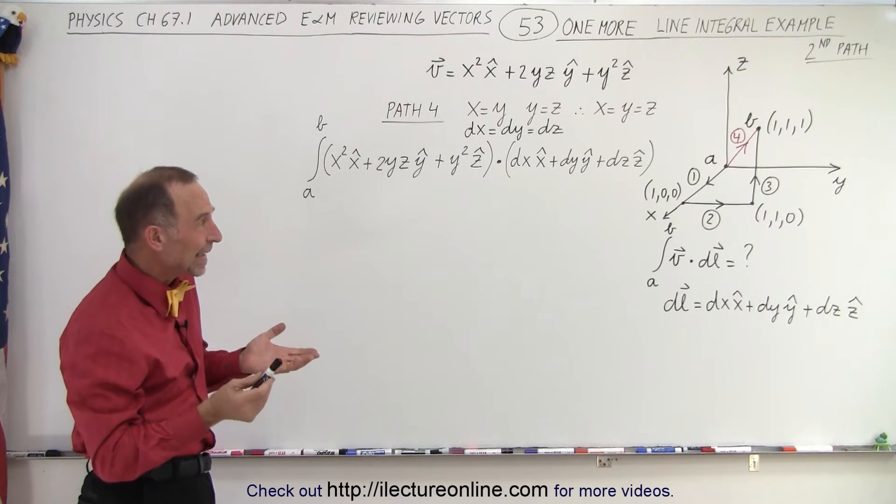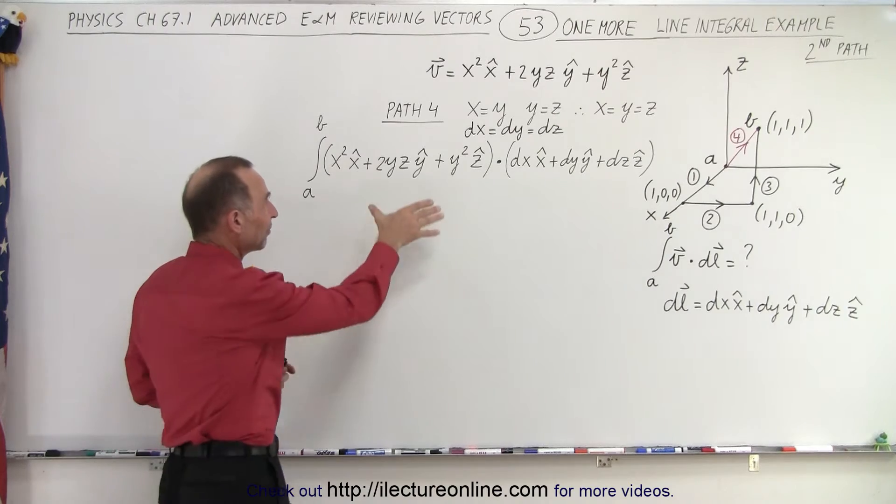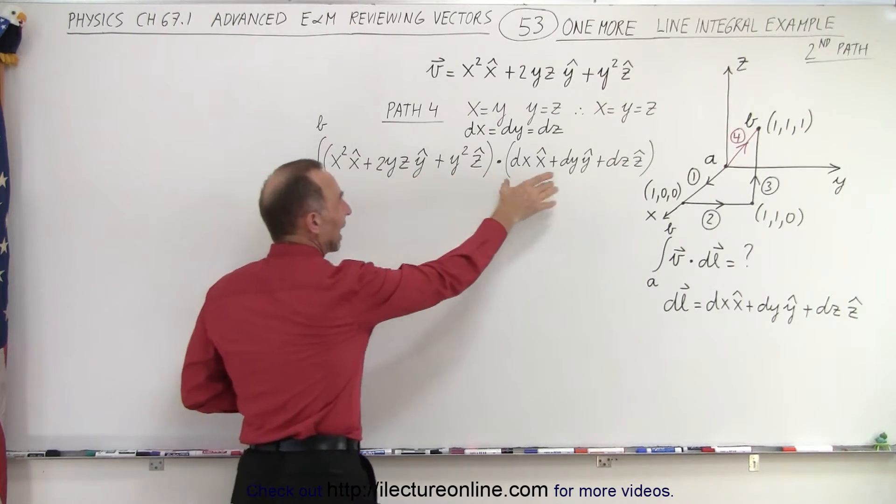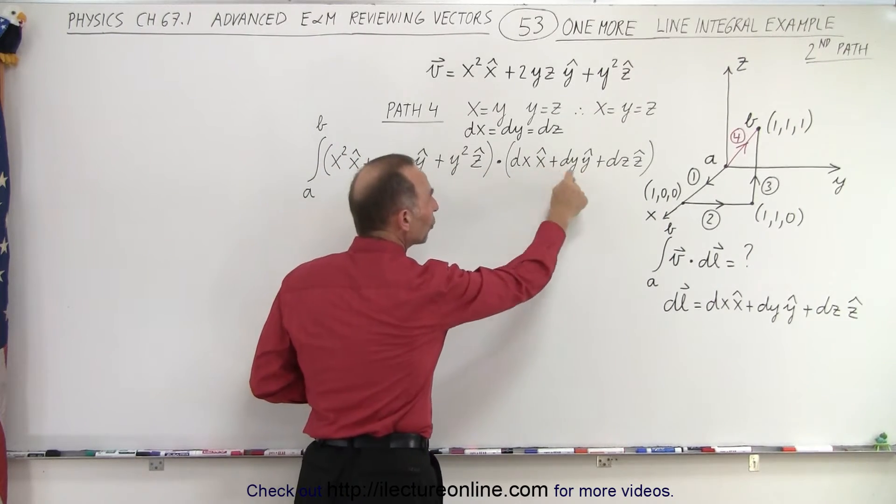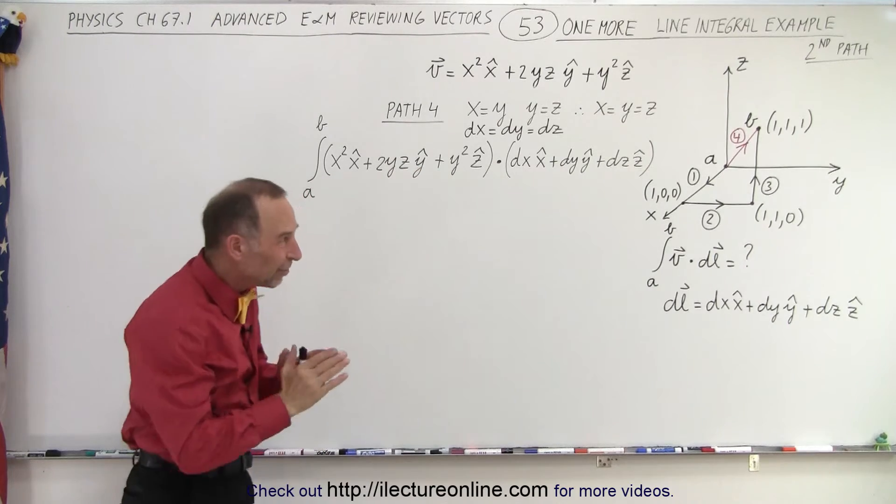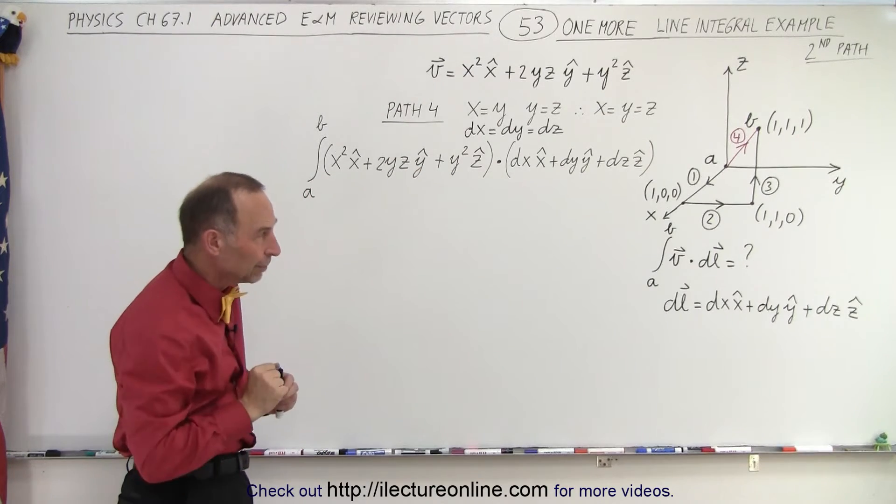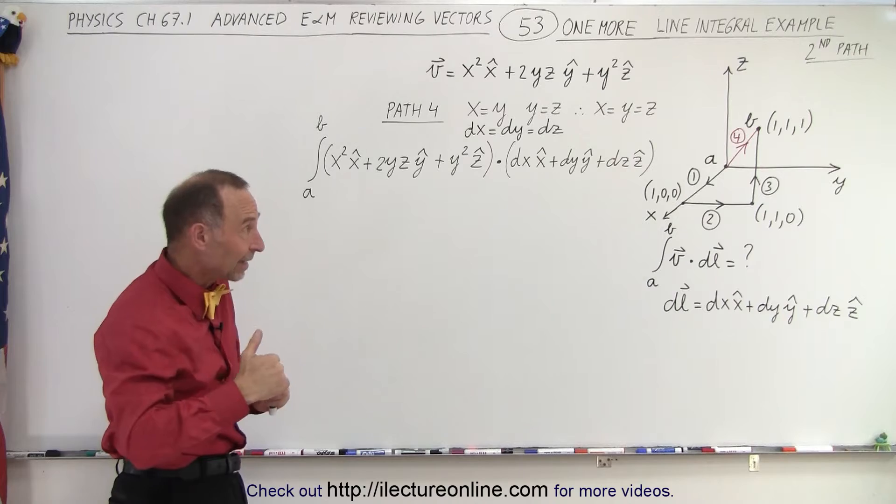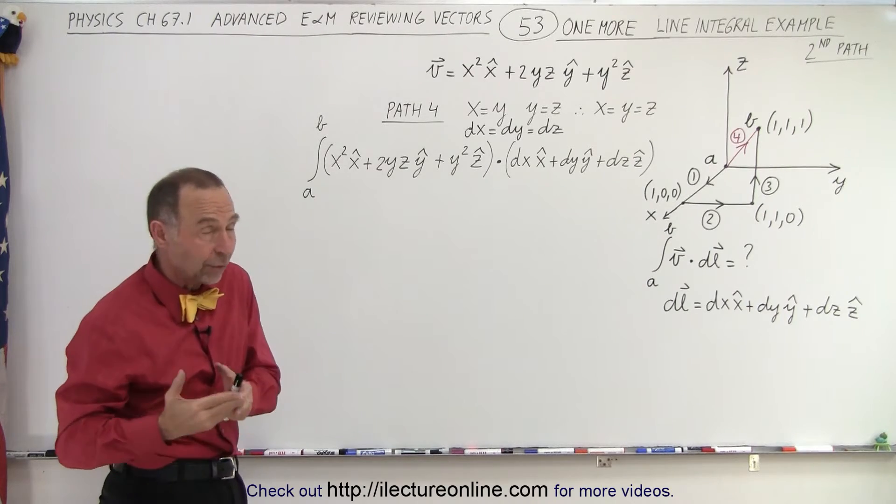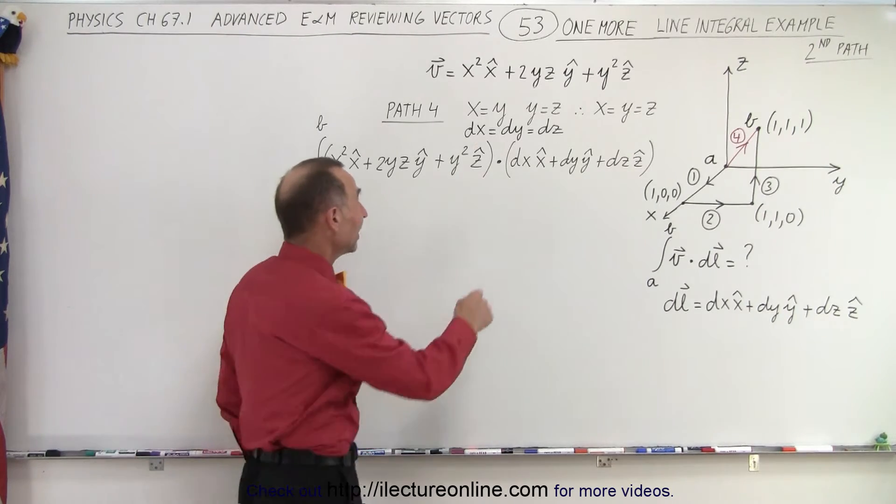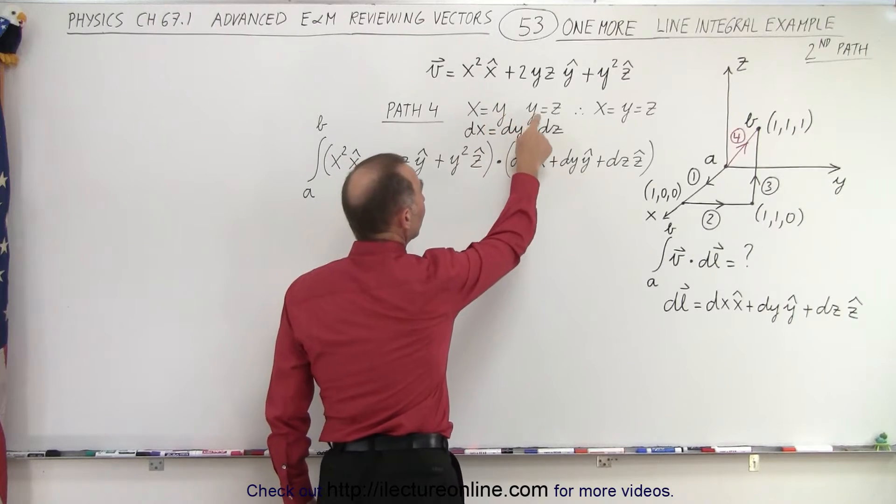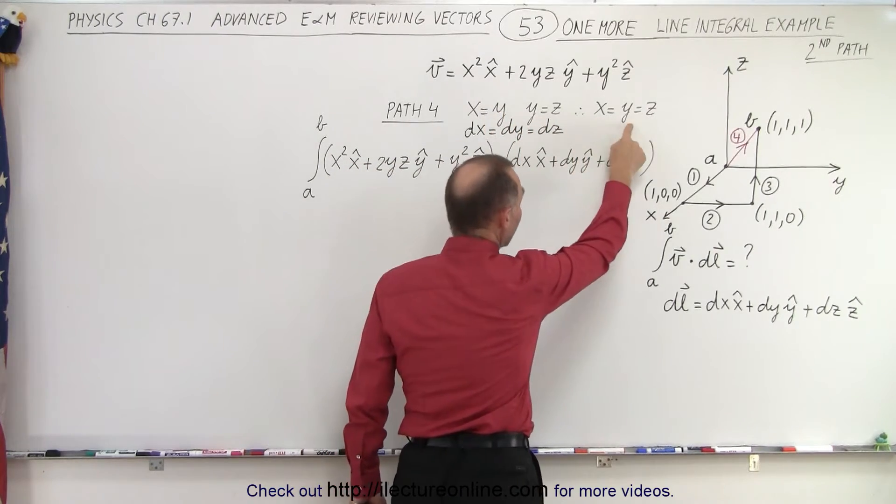So now when we take the line integral, we have the vector dot product times DL. And so we have all three components. But since we're traveling along that diagonal, and the distance along the x-axis, the y-axis and the z-axis are equal to the same, we can say that x must equal y and y must equal z, so therefore x equals y equals z.